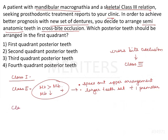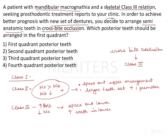Likewise, in class 3, which could be because of a large mandible, a small maxilla, or both — in that kind of scenario you will space out the lower teeth, use larger teeth in the lower arch, or add an additional premolar. This is the conventional way of dealing with class 2 and class 3.